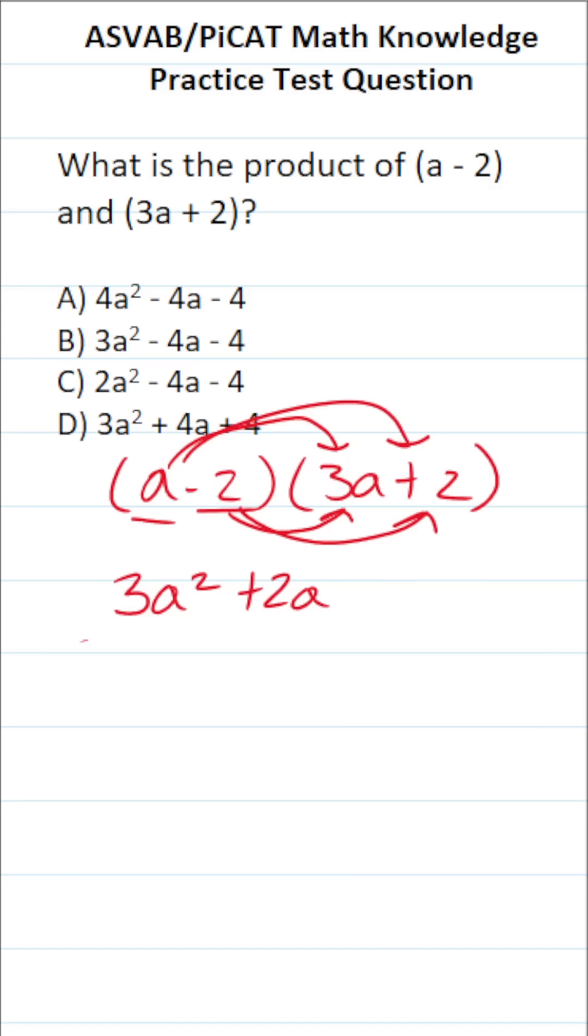A negative times a positive is going to be negative 6a. And negative 2 times positive 2 is negative 4.